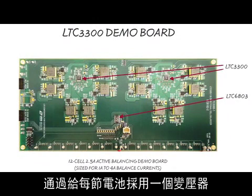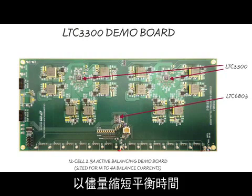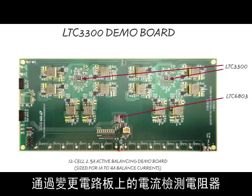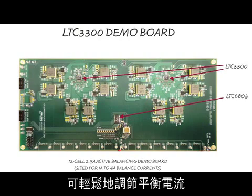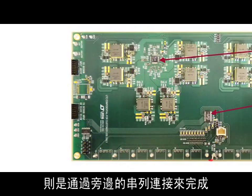By using one transformer per cell, all balancers may operate simultaneously to minimize balancing time. Balance currents are easily adjusted by changing current-sense resistors on the board, and communication with the board is done through a serial connection on the side.